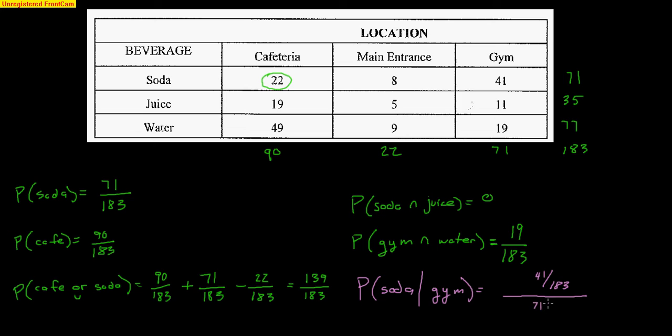71 students out of 183 used the gym vending machine. And through the magic that is mathematics, those 183s cancel and you get 41 out of 71. The idea is that the condition is I must have been in the gym vending machine. So that means I'm only allowed to look at the 71 kids who use the gym vending machine, of which 41 bought soda. So 41 out of 71.